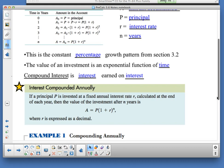Remember, compounding interest is interest made on interest made on an initial principal. This is the constant percentage growth pattern from section 3.2. The value of an investment is an exponential function of time. Compound interest is interest earned on interest, and I can't emphasize that enough.